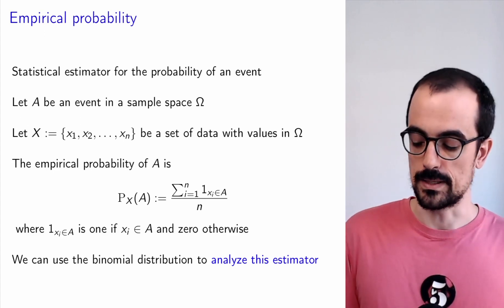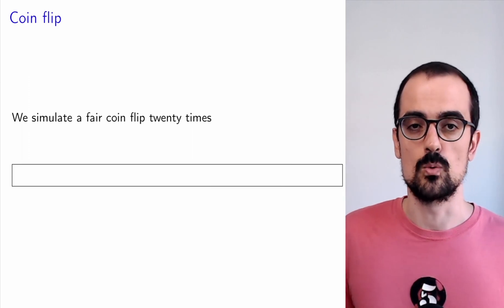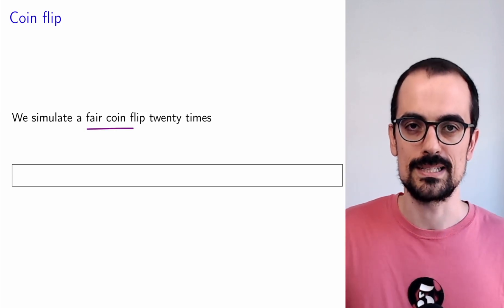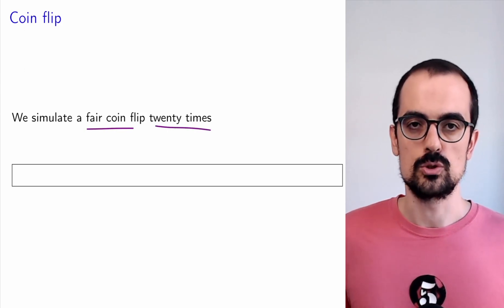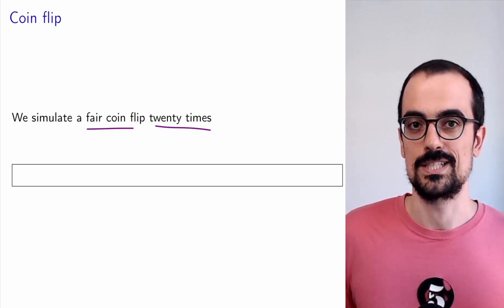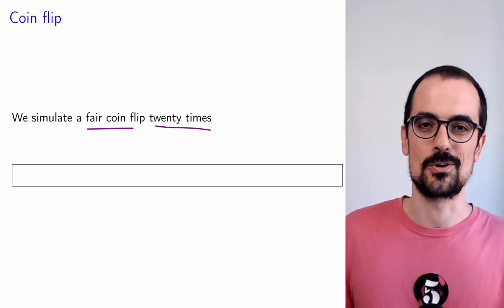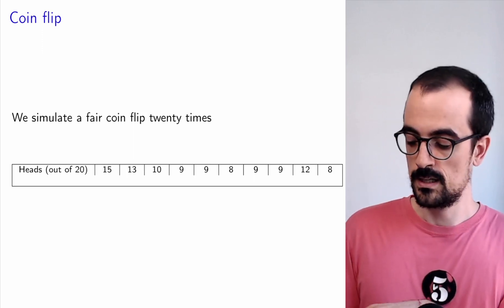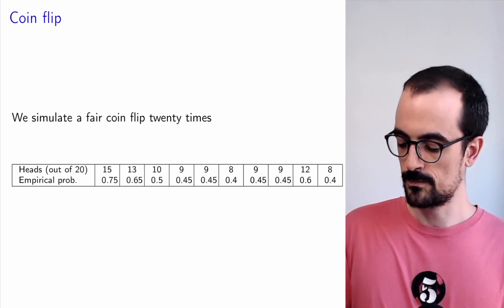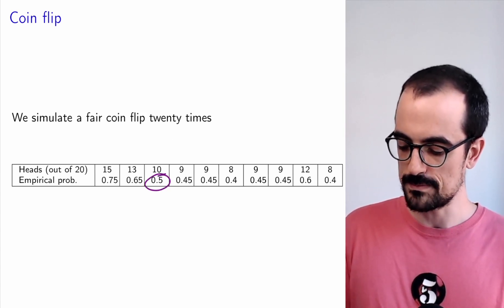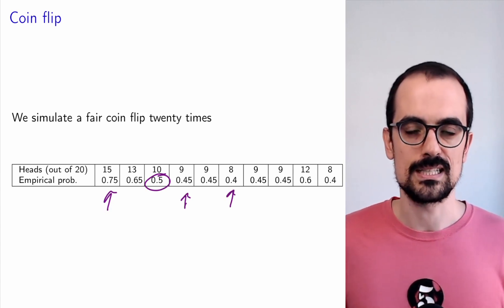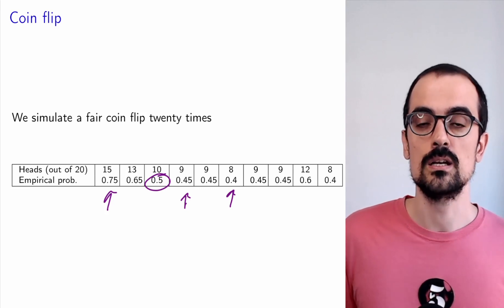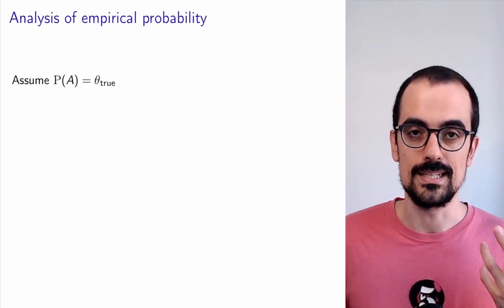We want to analyze the behavior of this estimator because with limited data it can be quite noisy. For example, we take coin flips from a fair coin — the true probability we're trying to estimate is 0.5 — but we only get 20 data points. Looking at the fraction of heads gives our estimate. Doing this 10 times, we can see the estimates are not so far from 0.5, but sometimes they can be noticeably off. Our goal is to understand how likely we are to get an accurate estimate using the empirical probability estimator.